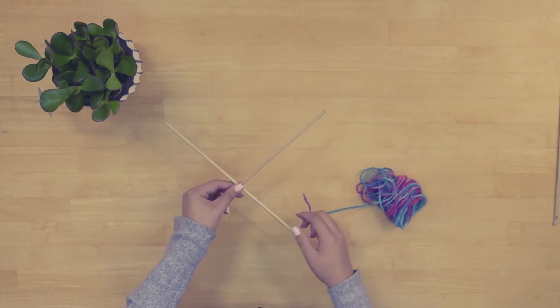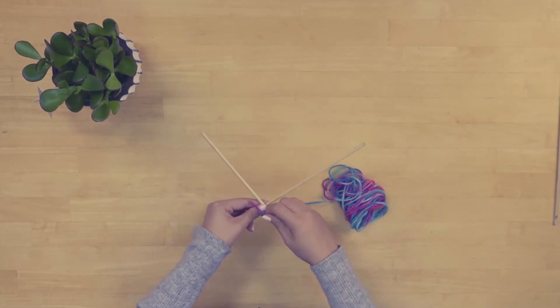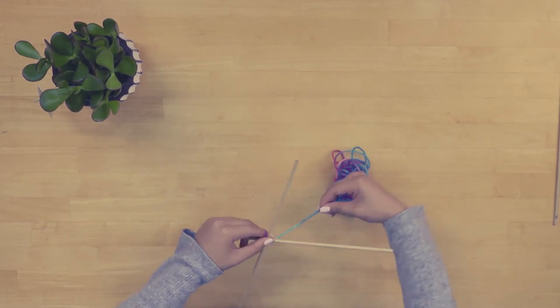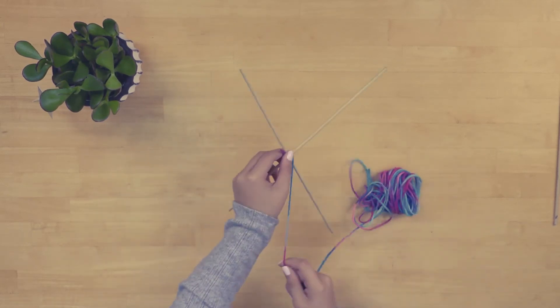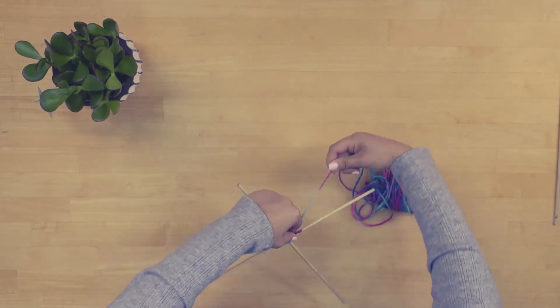After you have crossed them, you will grab your yarn and begin to wrap it around the center where the two dowels meet in order to keep them in place.